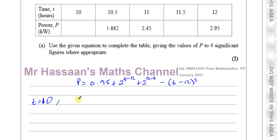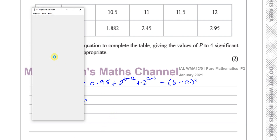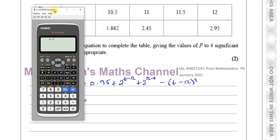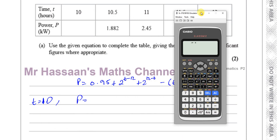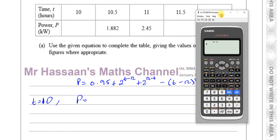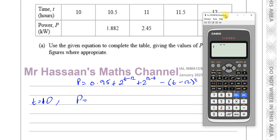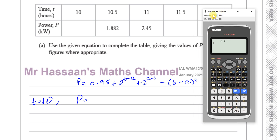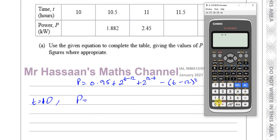What I'm going to do first is take my calculator and verify I'm on the right track. I'll use the formula with t equals 11 just to make sure I haven't made a mistake. So I have 0.95...